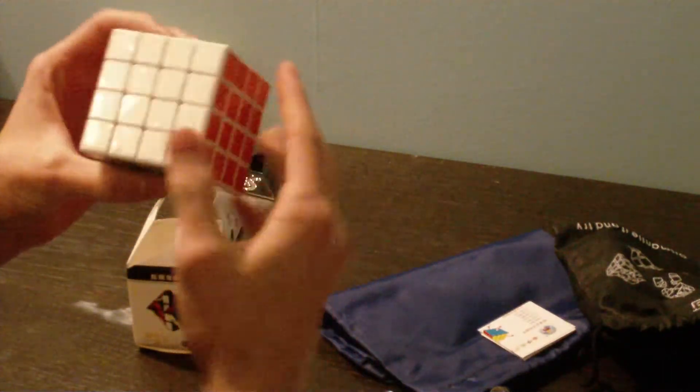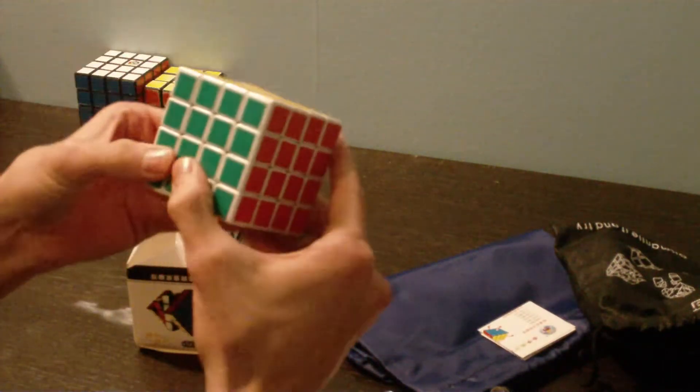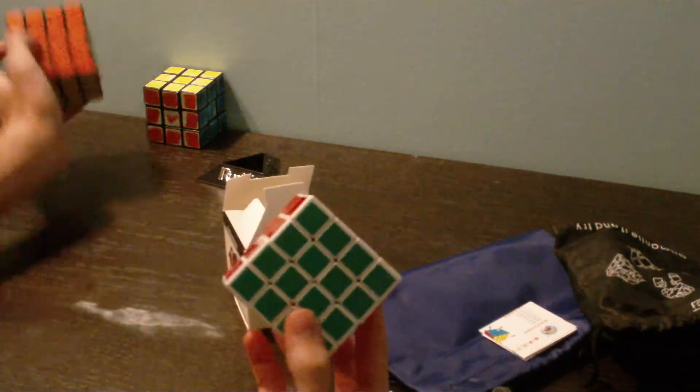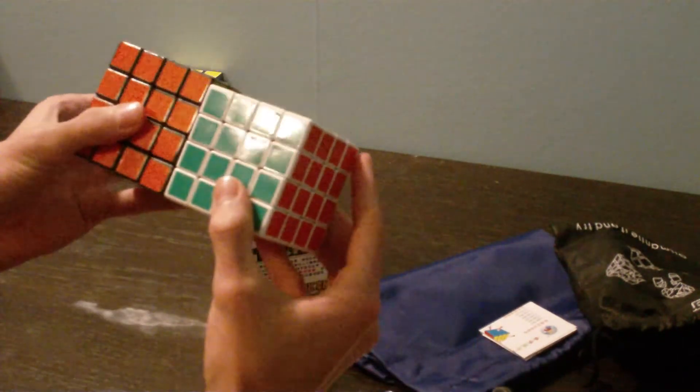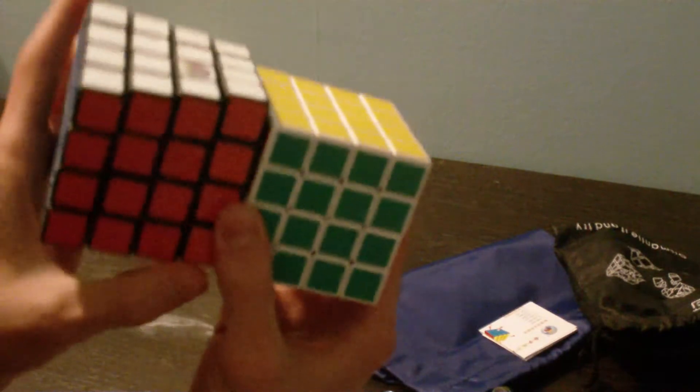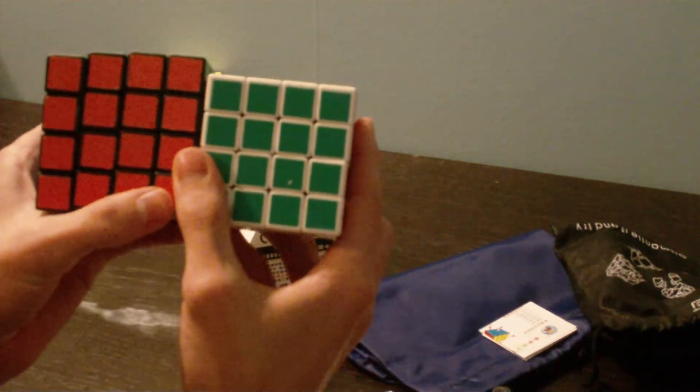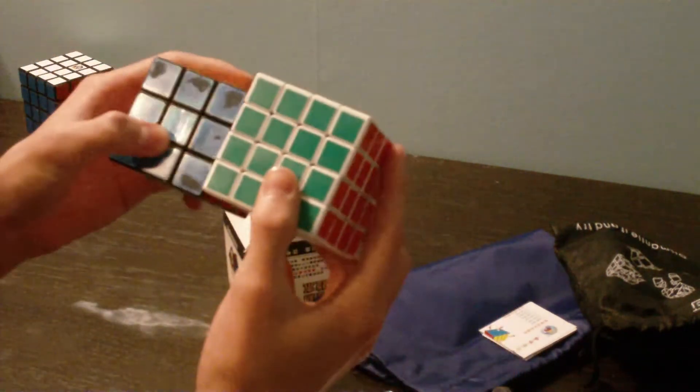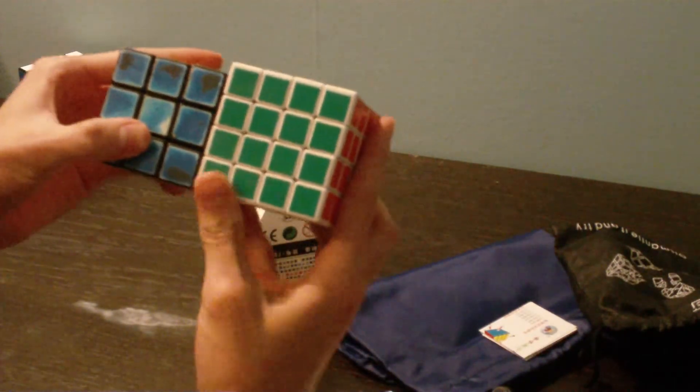Now this cube already looks very small compared to Rubik's 4x4. It's much smaller. And compared to the Rubik's 3x3, it's a bit bigger.